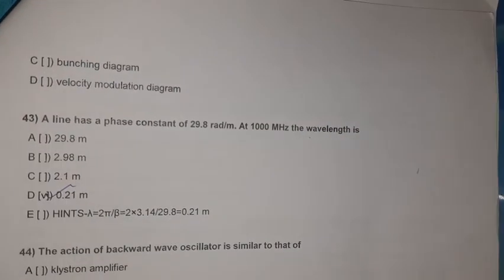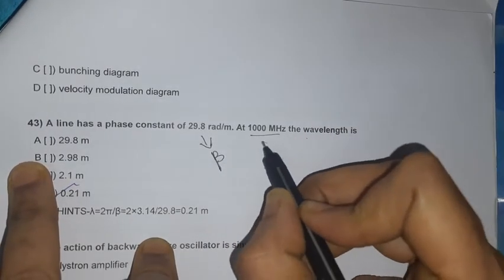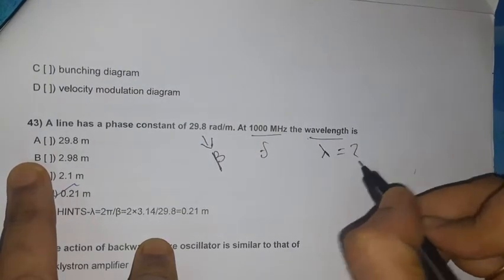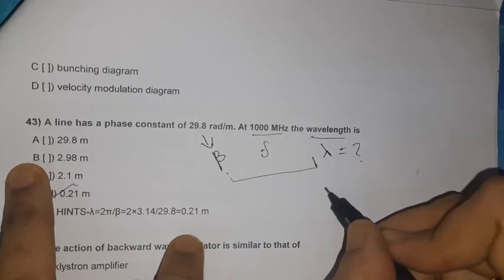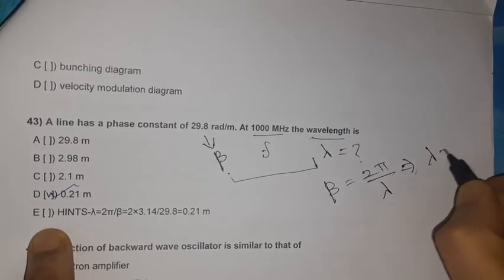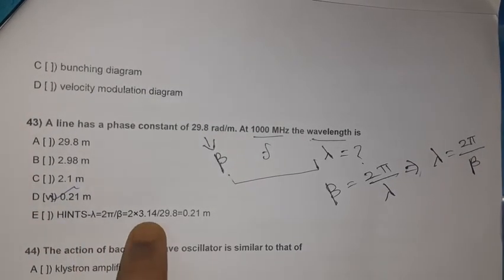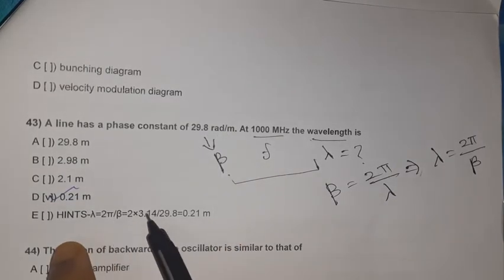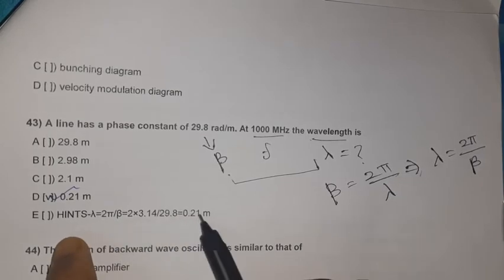Question 43: A line has a phase constant β = 29.8 rad/m at 1000 MHz. The wavelength λ = 2π/β = 2π/29.8 ≈ 0.21 meters.